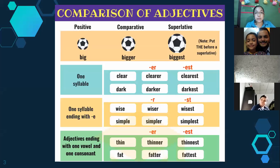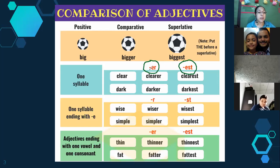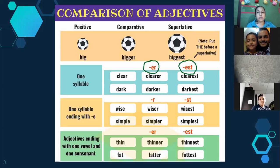We have two degrees of adjectives: positive, comparative, and superlative. When you use positive, that's the normal form of an adjective. In comparative, you add the suffix -er. In superlative, you use the suffix -est. The difference is: comparative compares two things — two animals, two people, two objects. Superlative means one person, animal, or object is more than all others.